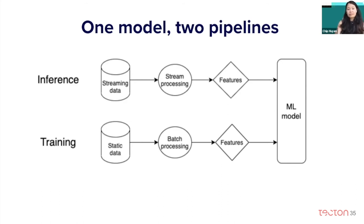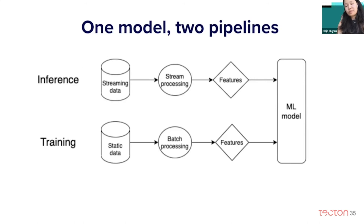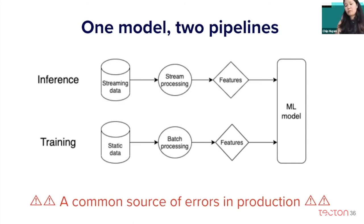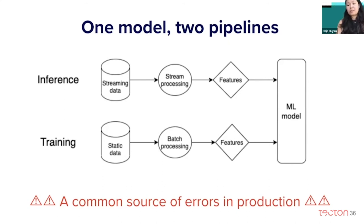You have one machine learning model but two different pipelines. For training, you have static data, go through batch processing, extract features, and input them into the model. For inference, you have streaming data, go through stream processing, extract features, and input them into the model. This is actually a very common source of errors in production, especially when the two different pipelines are maintained by different teams — for example, the training pipeline is maintained by the machine learning team, whereas the inference pipeline is maintained by the DevOps team.